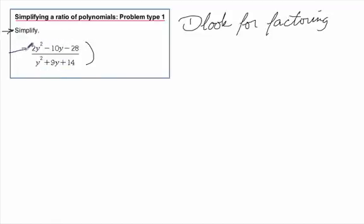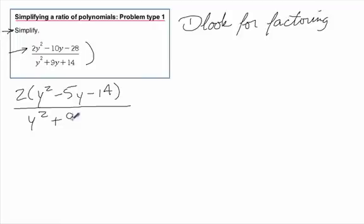But if we take a look at this numerator first, we notice that there's a common 2 in there. So we can factor out a 2. And that would be y squared minus 5y minus 14. And then the bottom can stay the same for now because there's no common factors.